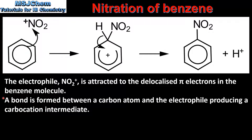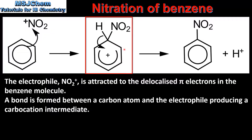A bond is formed between a carbon atom and the electrophile, producing a carbocation intermediate. Here we can see that a bond has formed between a carbon atom in the benzene molecule and the nitrogen atom of the nitronium ion. The delocalized pi system that gives benzene its stability has been disrupted, shown by the breaking of the ring.